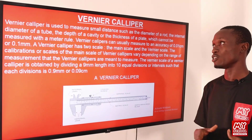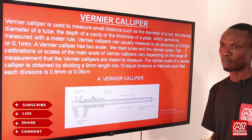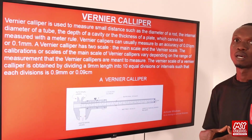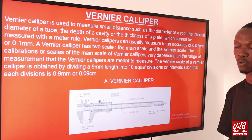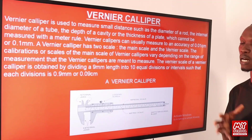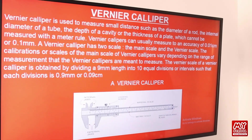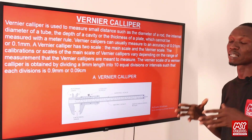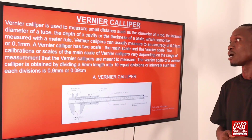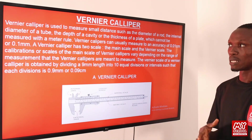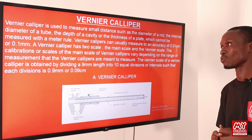Another instrument is known as the vernier caliper. The vernier caliper gives a greater degree of accuracy than the meter rule, and is used to measure smaller distances such as the diameter of a rod, the internal diameter of a tube, the depth of a cavity, and the thickness of a plate, which cannot be measured with a meter rule.